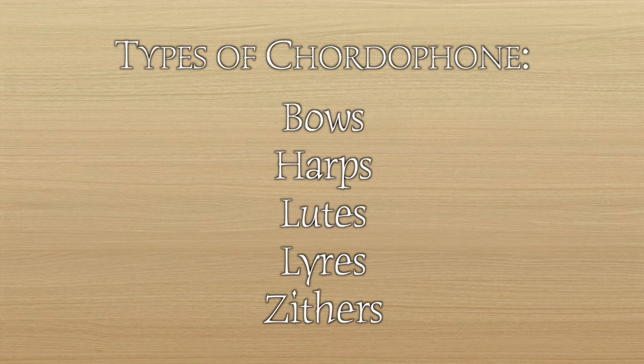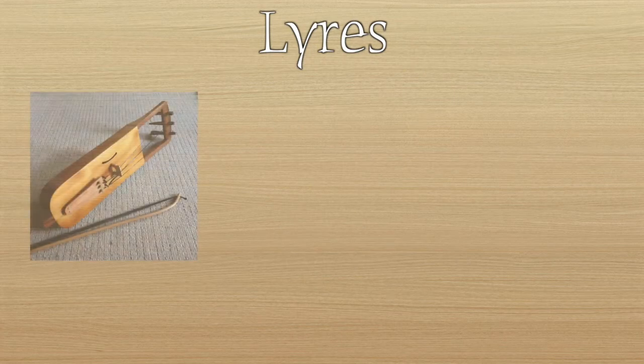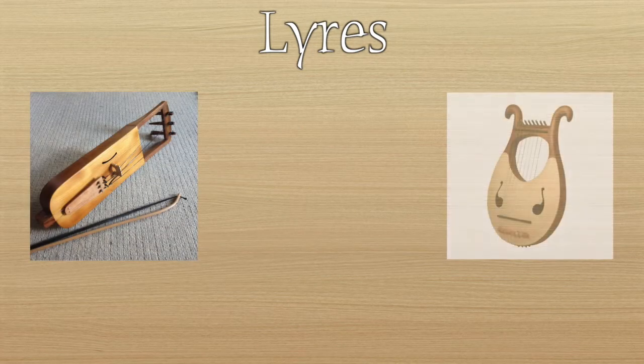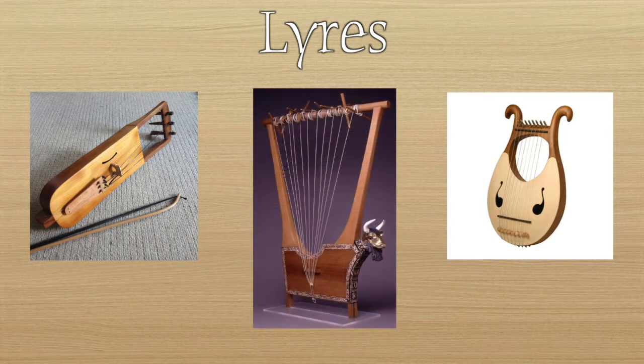For example, there are many types of lyre throughout history, but they vary massively. Some are played with a bow, while others are played with a plectrum. Some are small and some are quite big, but they all fall under the umbrella term lyre. So chordophones basically include any instrument you can think of that has strings on it.